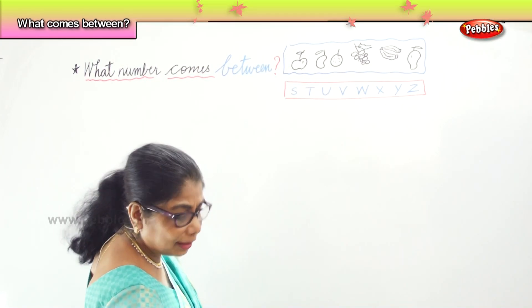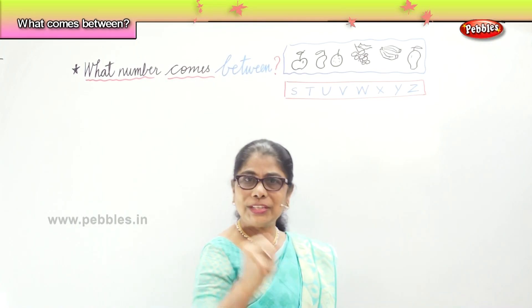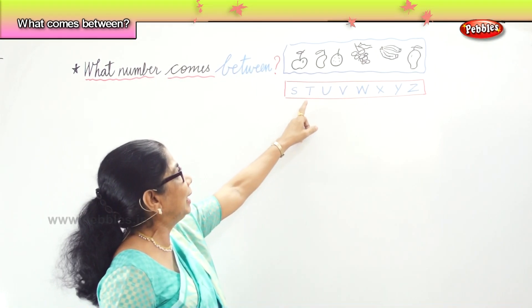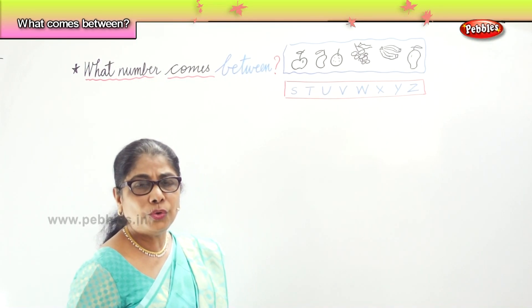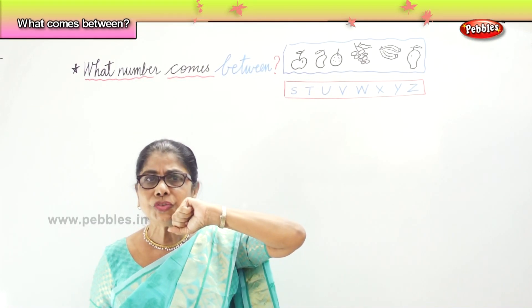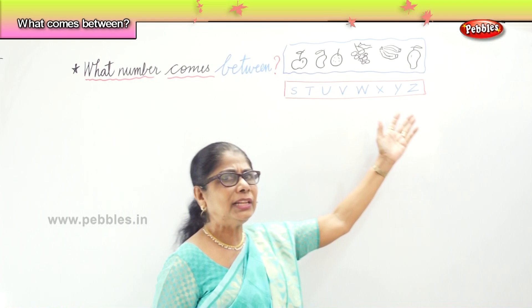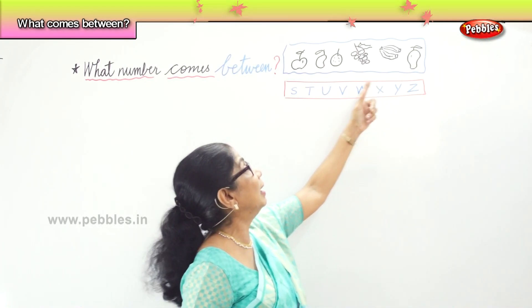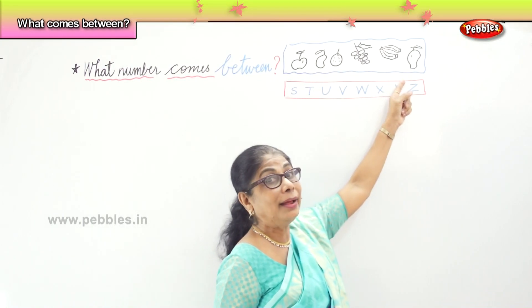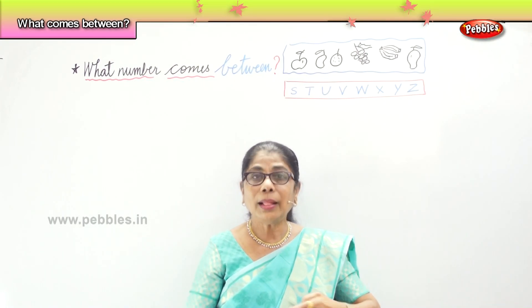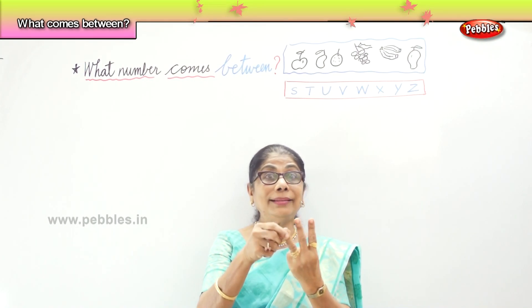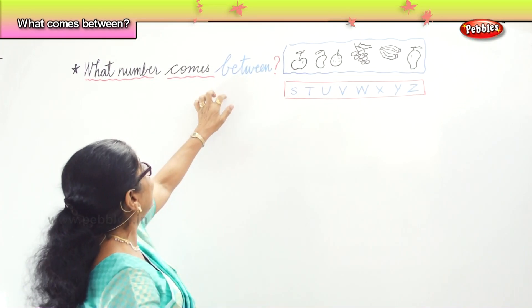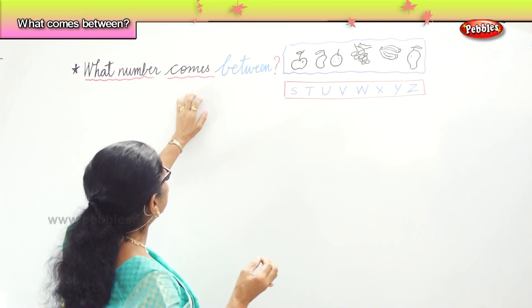What letter comes between X and Z? You will say Y. What letter comes between W and Y? What letter comes between T and U? Now I am asking you, what fruit is there between the apple and the orange? You will say mango. What fruit is there between the orange and the banana? Name the fruit between the grapes and the pear — you will say banana. Name the finger between the pointer and the ring finger — you will say the tall man or middle finger. Between.